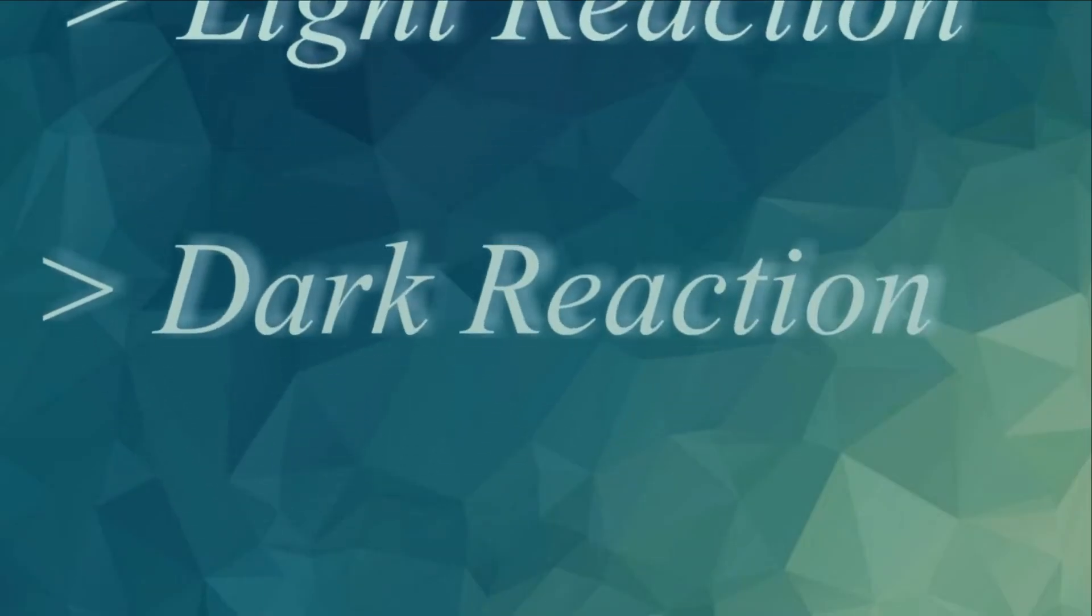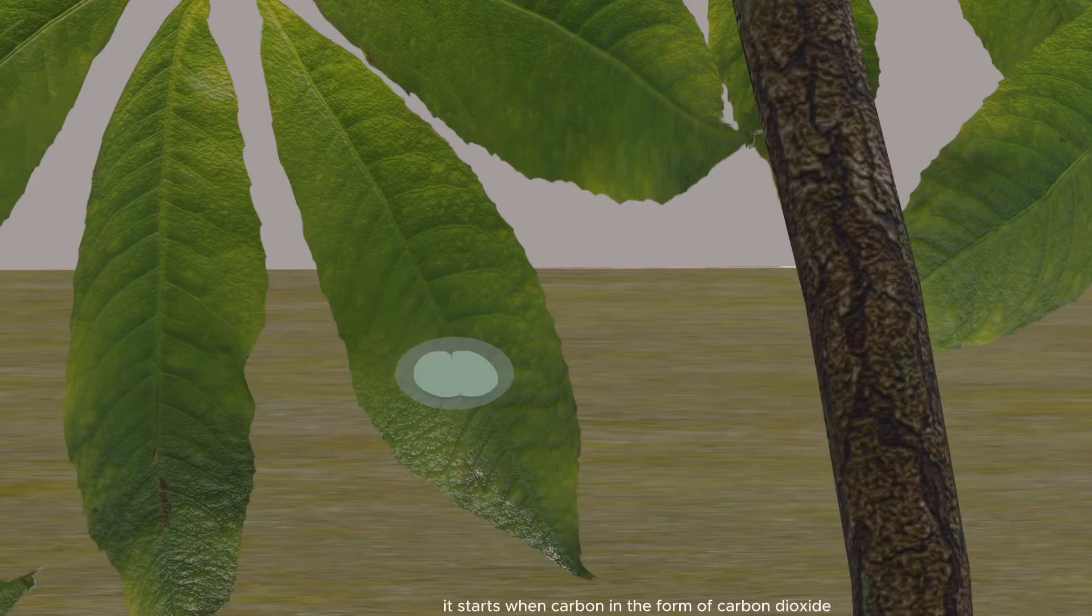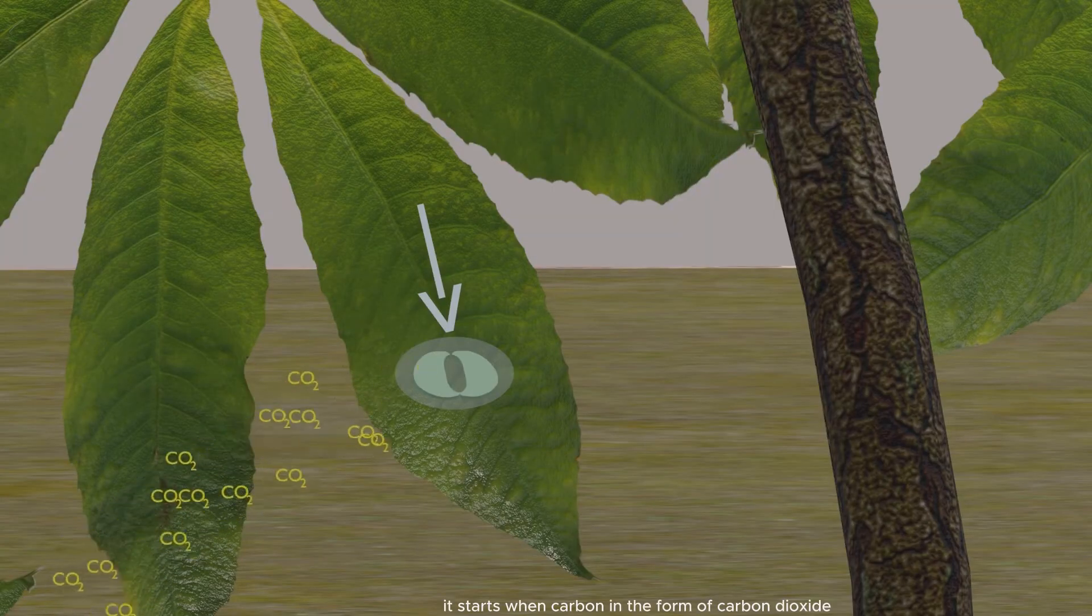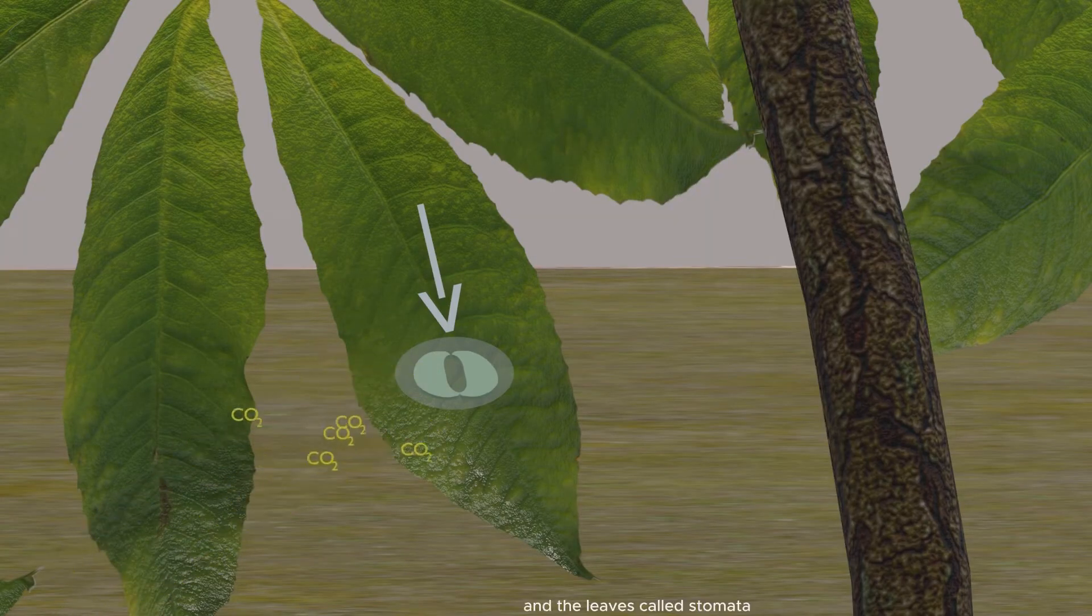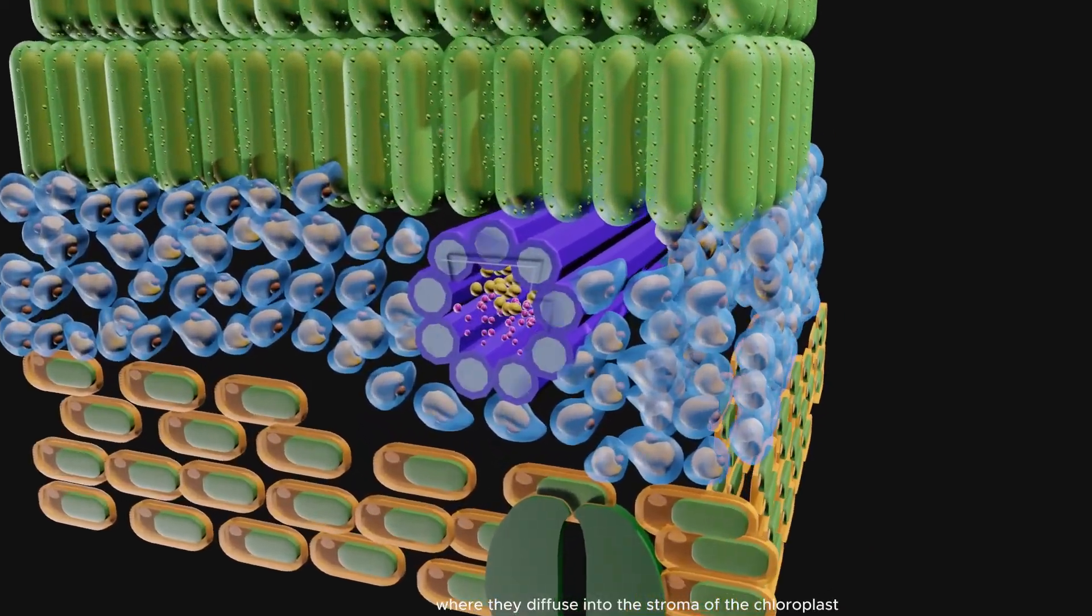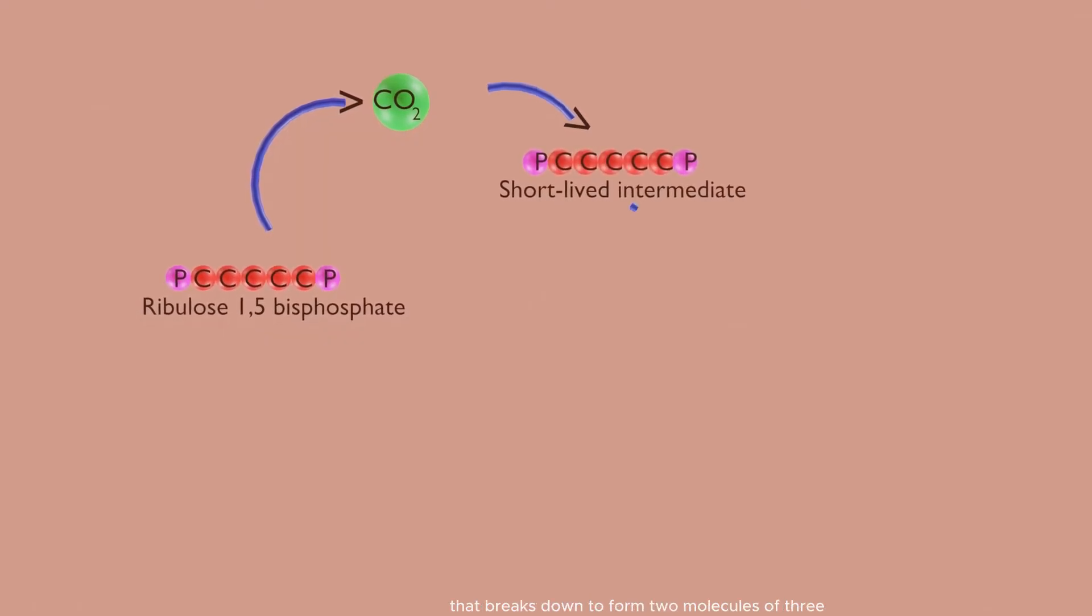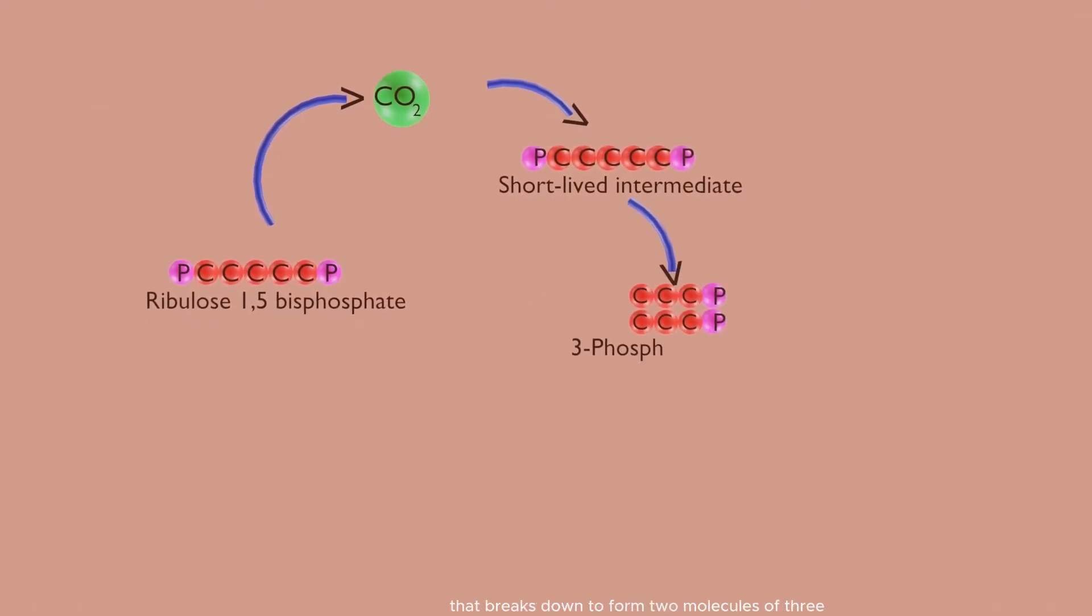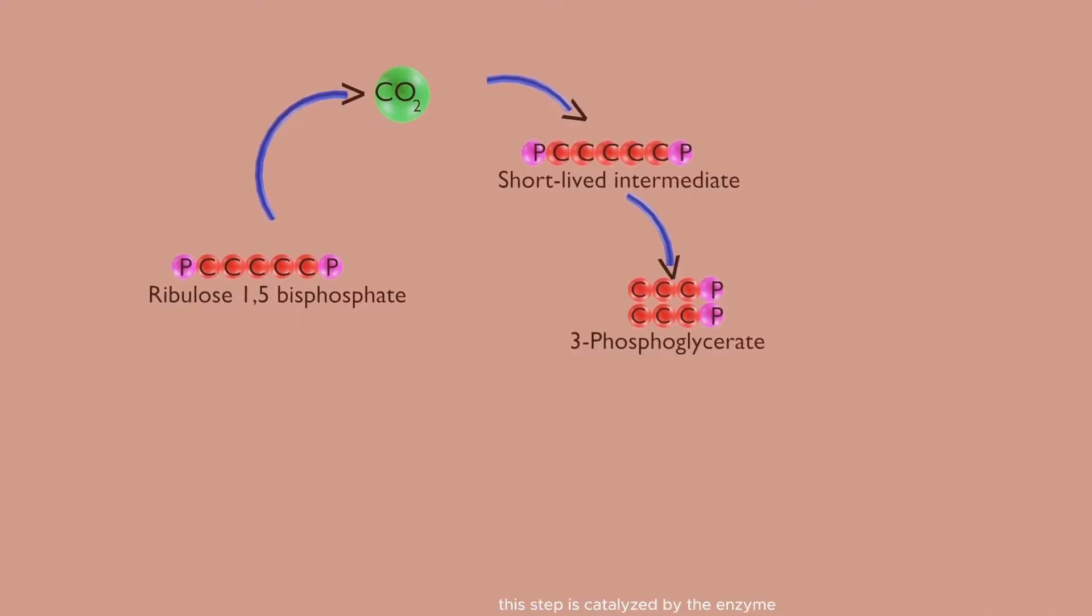Mechanism of dark reaction: It starts when carbon in the form of carbon dioxide enters through minute pores in the leaves called stomata, where they diffuse into the stroma of the chloroplast. Carbon dioxide combines with a five-carbon molecule, ribulose 1,5-bisphosphate, to form an unstable six-carbon intermediate that breaks down to form two molecules of 3-phosphoglycerate. This step is catalyzed by the enzyme known as rubisco.